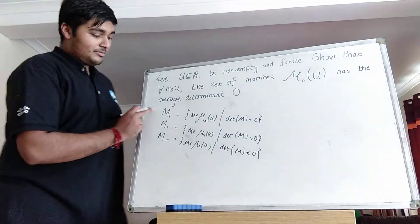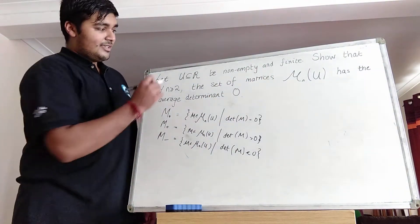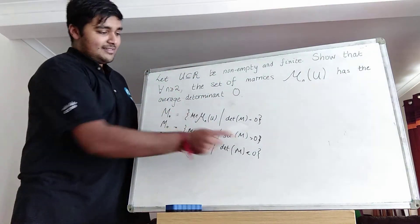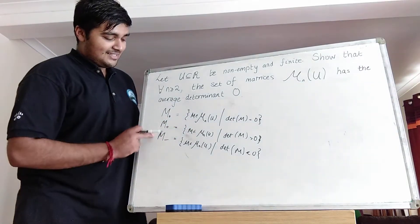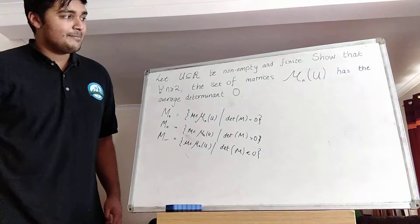Okay, now firstly we can sort, well firstly the thing to note is these three sets partition M_n(u) because u is a subset of the reals so the determinant of any matrix in this set is going to be real. Hence, the trichotomy says that M_n(u) is just the disjoint union of these three sets here. Cool.